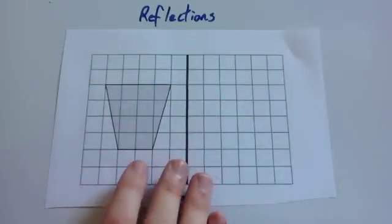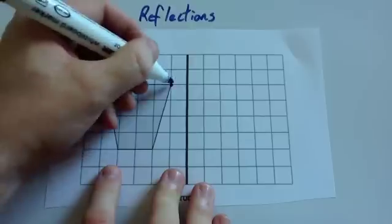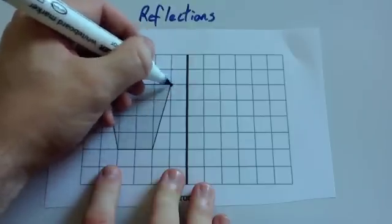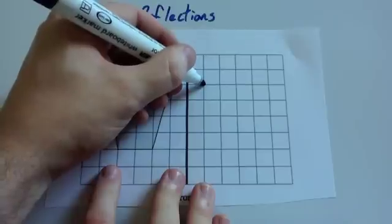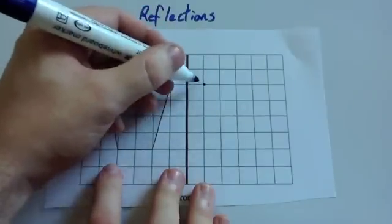To do that, you start off, you look at one point at a time. So let's start off looking at this point. So from here, it's one line across to the mirror line. So we're going to go another line across that way. So that's where we'd go to. So one across, another one across.